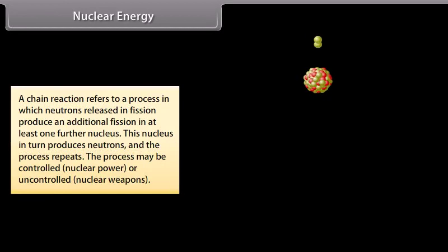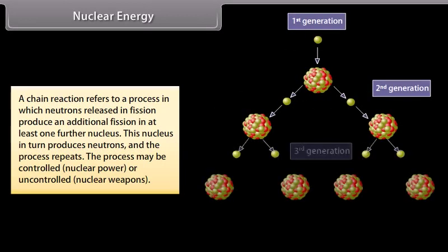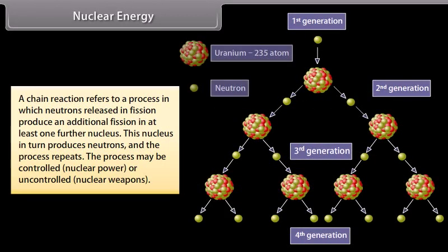Nuclear energy. A chain reaction refers to a process in which neutrons released in fission produce an additional fission in at least one further nucleus. This nucleus in turn produces neutrons, and the process repeats. The process may be controlled or uncontrolled.